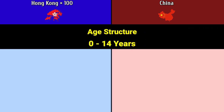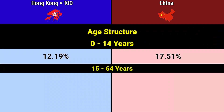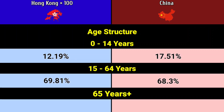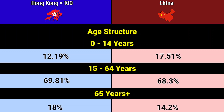Age structure — 0 to 14 years: Hong Kong 12.19%, China 17.51%. 15 to 64 years: Hong Kong 69.81%, China 68.3%. More than 65 years: Hong Kong 18%, China 14.2%.